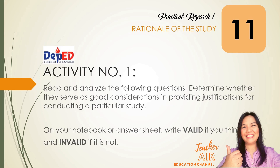Let's have a preliminary activity. This is activity number one. Read and analyze the following questions. Determine whether they serve as good considerations in providing justifications for conducting a particular study. On your notebook or answer sheet, write valid if you think it is, and invalid if it is not.